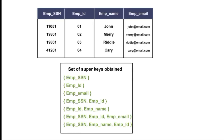A relational database stores data in the form of tables — that means rows and columns. These columns are nothing but attributes. Each column represents a different attribute, and each row represents a record. For example, this table stores employee records. An attribute is a characteristic of your relation — for instance, employee ID is one characteristic describing a particular employee.